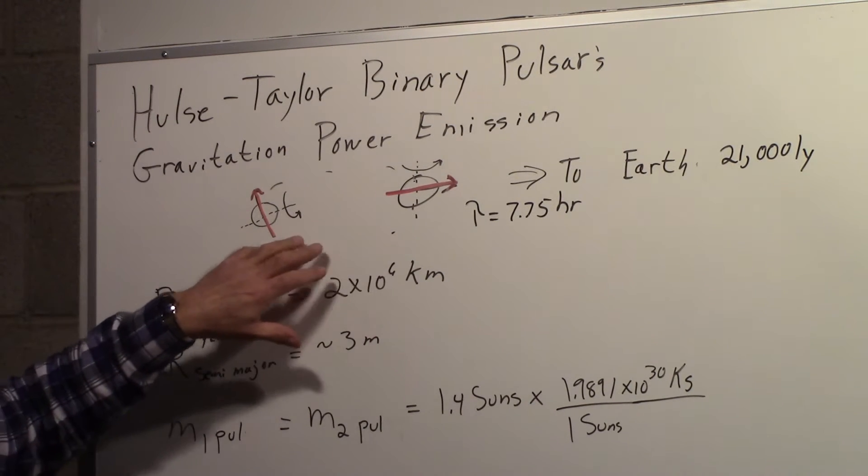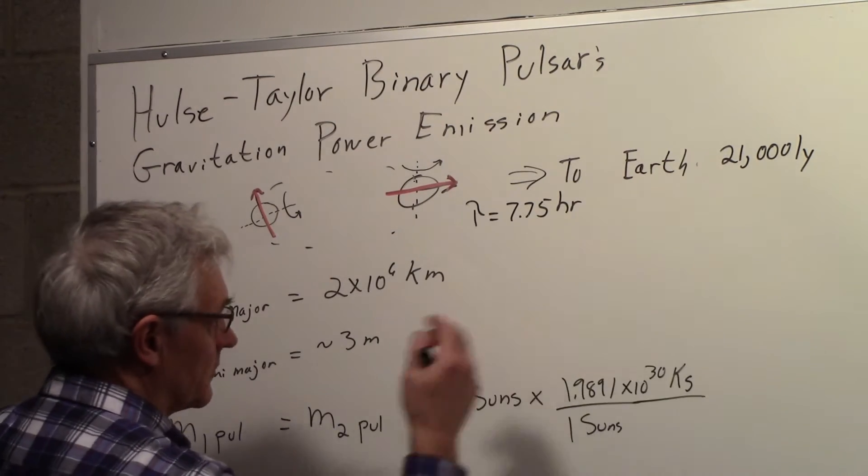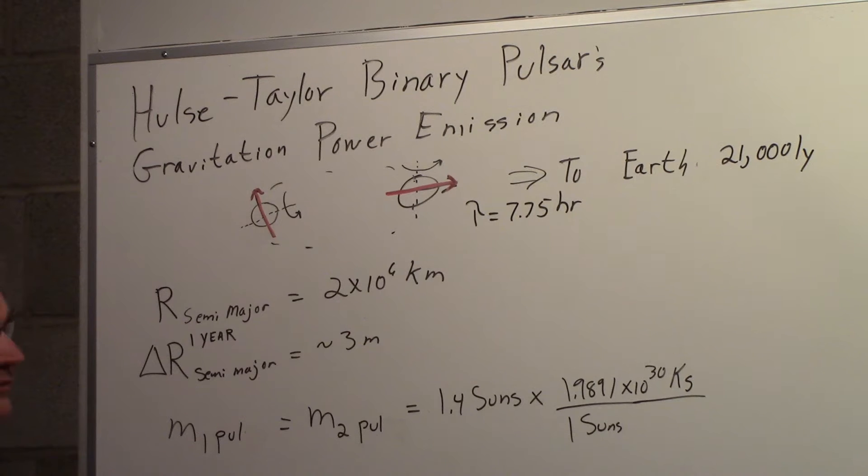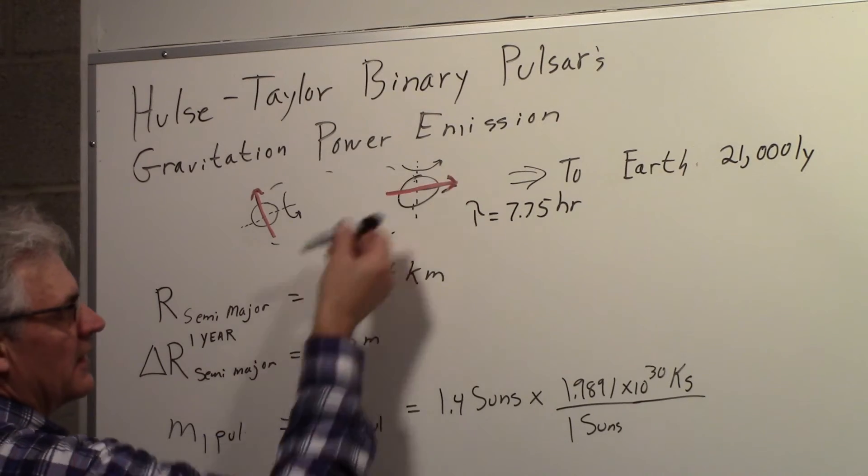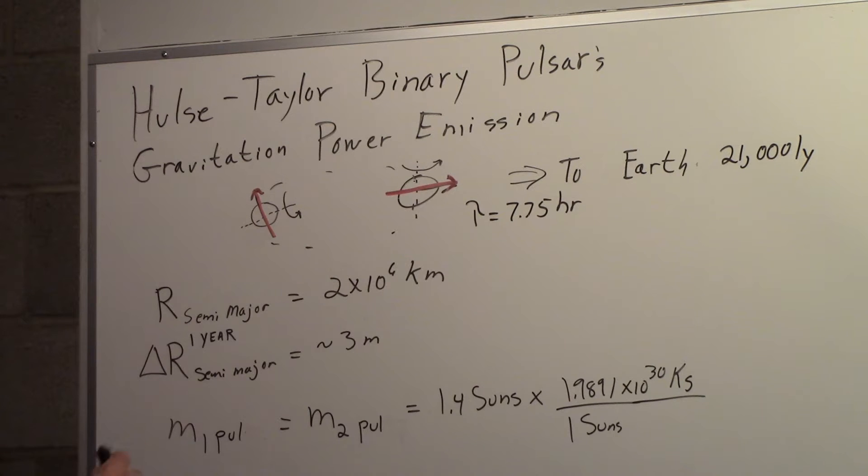So here's a rough sketch of the two pulsars. The Earth is 21,000 light years away. They're orbiting one another for a period of about 7.75 hours. And one of the pulsars, the way it's rotating, its emission axis is pointing towards the Earth. So the pulses from that pulsar can be seen on Earth. The other one has a different orientation.